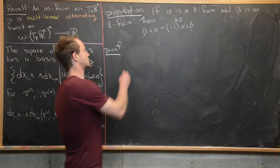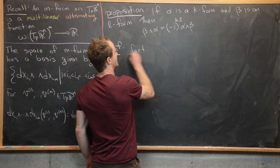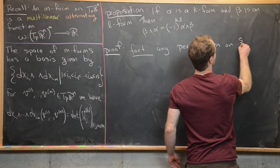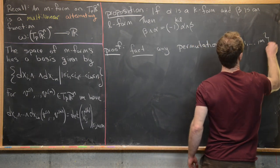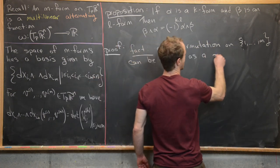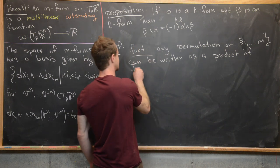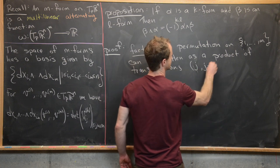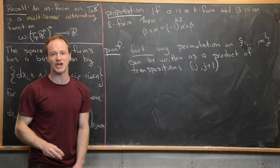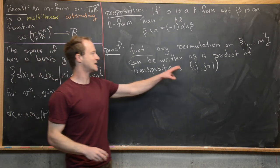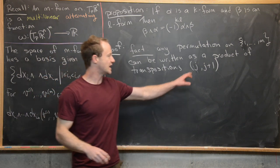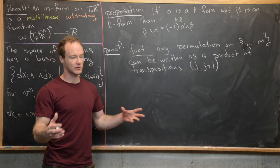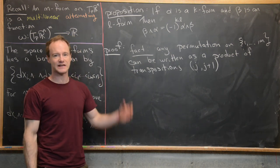We'll use a fact from abstract algebra: any permutation on the set {1, …, m} can be written as a product of transpositions of the form (j, j+1), i.e., switching the j-th term with the (j+1)-th term. So if we understand what happens when we apply one such adjacent switch to an elementary m-form, we have a general strategy for any permutation.